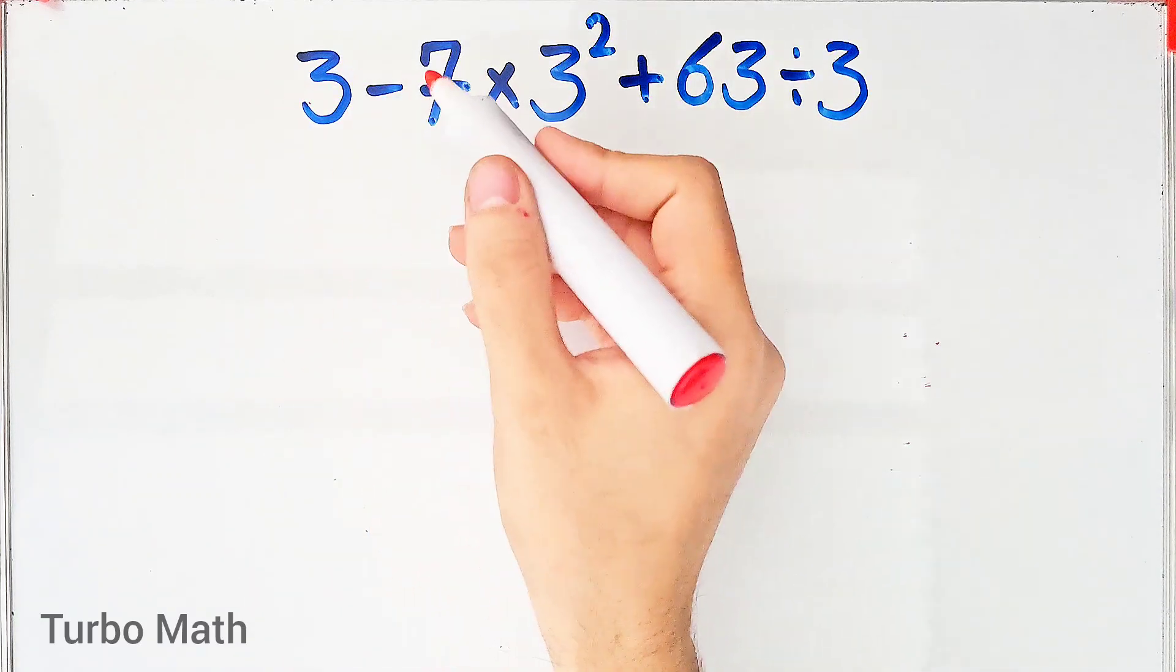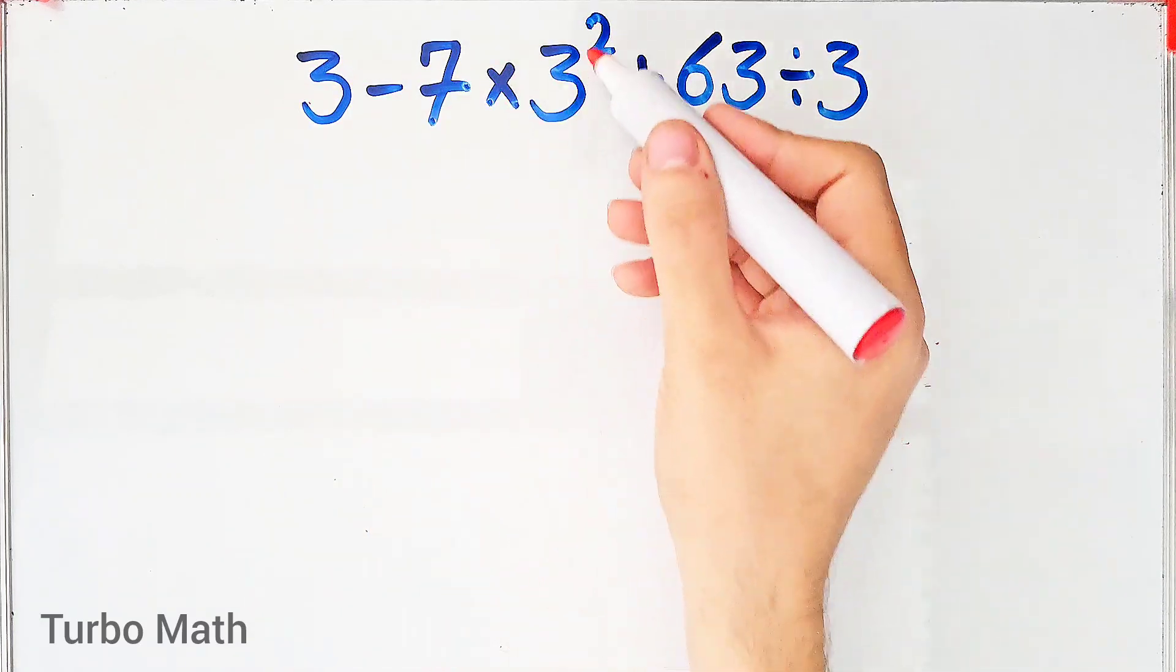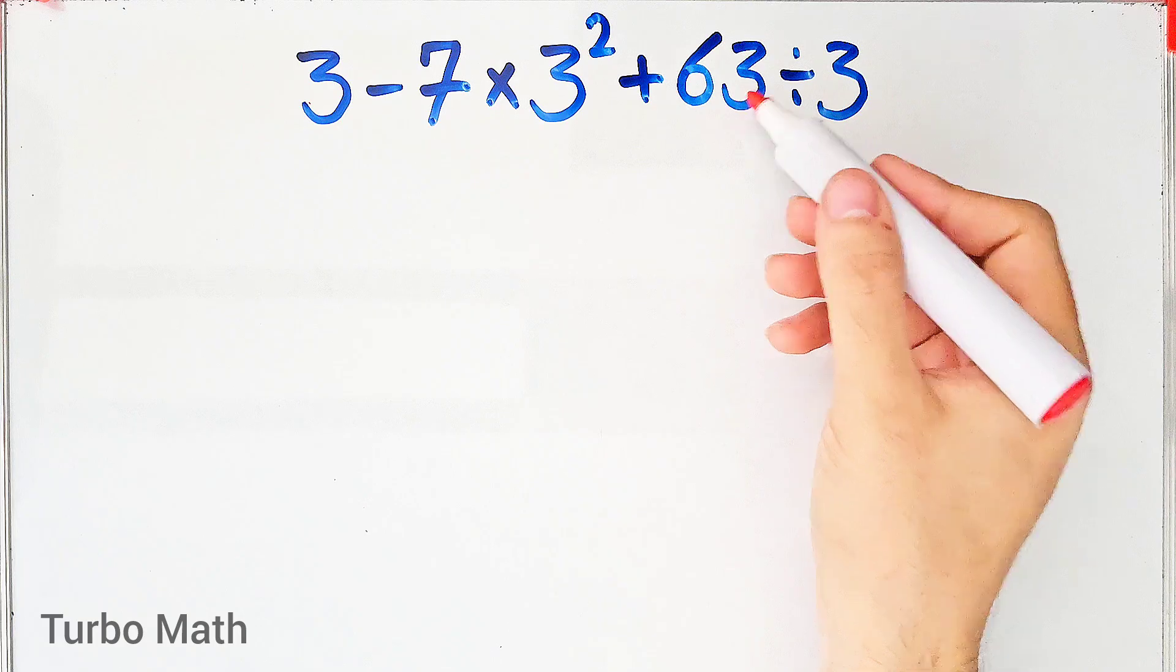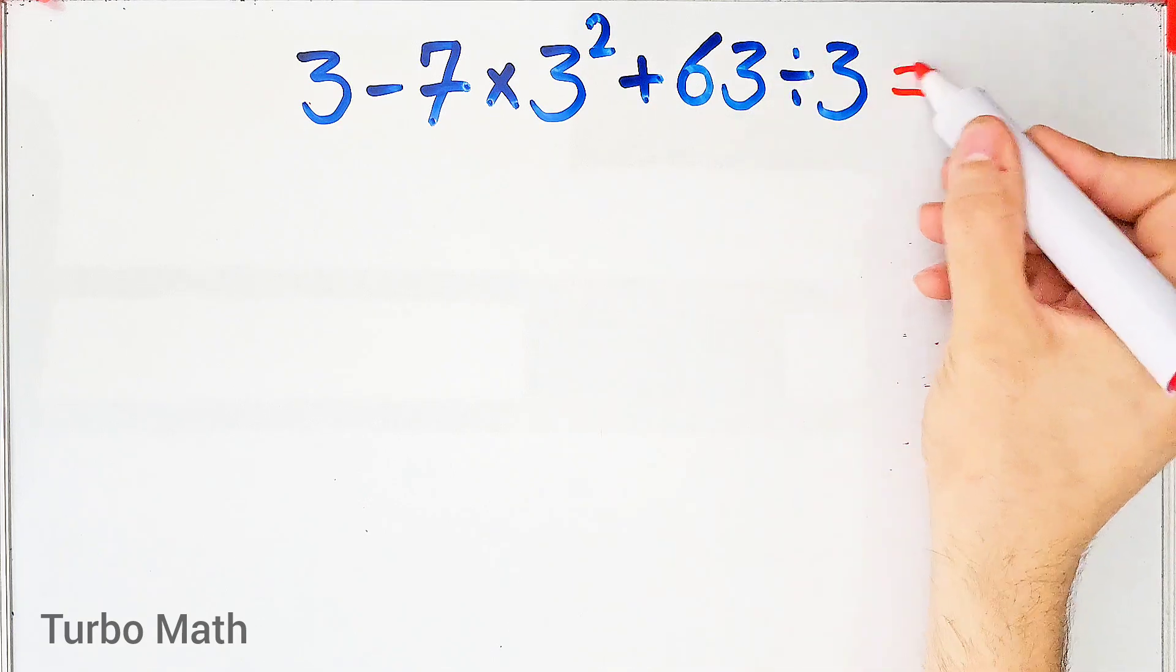3 minus 7, times 3 to the power of 2, plus 63, divided by 3. What is the answer to this question?